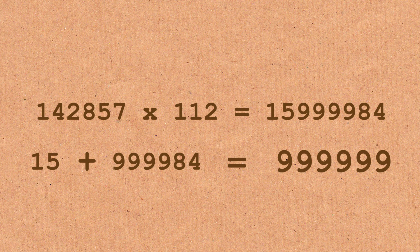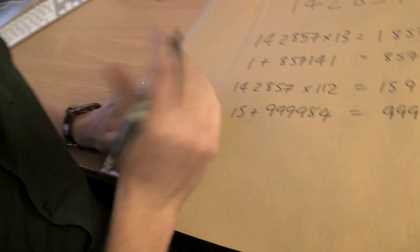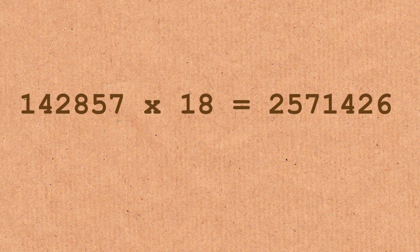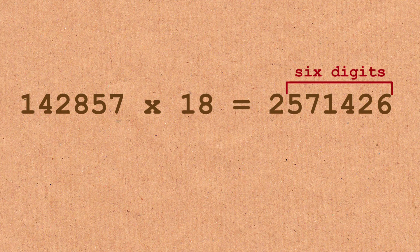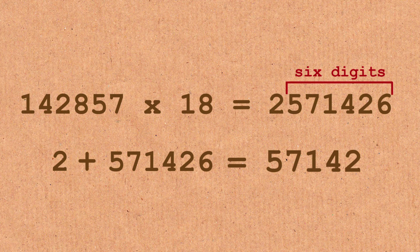We'll do one more. Okay? Eighteen. Eighteen. Okay. Not a multiple of seven. Thank you. Two million, five hundred and seventy-one, four hundred and twenty-six. Do the same thing. Take the last six. And I get five, seven, one, four, two, eight.